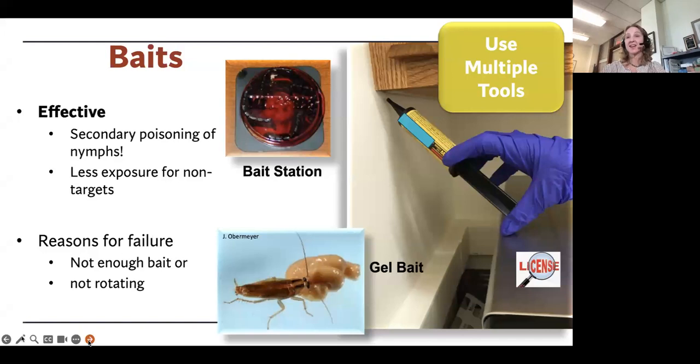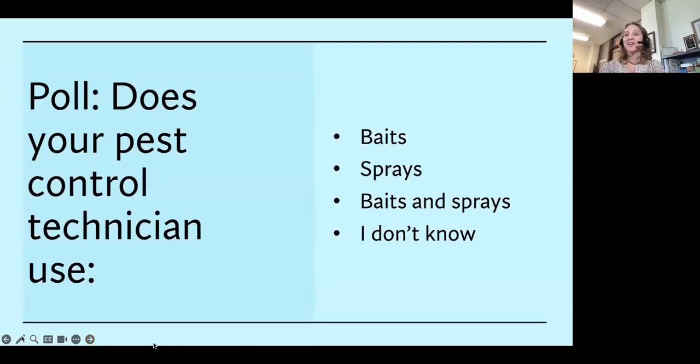You know who's eating their poop and their dead bodies? Those nymphs that are hiding in those hiding places that never leave those hiding places. That's how they survive. They survive on eating the poop and the dead bodies of the older cockroaches. That's gross, but it does help us control cockroaches because they say for every one cockroach we poison with bait, that one cockroach has killed about 30 cockroaches, the nymphs back in the hiding place. Do you know if your pest control technician uses baits or sprays, baits and sprays, or depending on maybe depending on the situation, or I don't know but I'm going to find out?